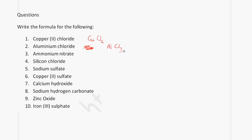Ammonium nitrate: ammonium is NH4, nitrate is NO3. The valency of ammonium is 1 and nitrate is 1, so we don't need to do anything — the formula is NH4NO3. Silicon chloride: silicon is Si, chloride is Cl. Silicon has a valency of 4 and chloride has a valency of 1, so we swap to get SiCl4. Sodium sulfate: sodium is Na, sulfate is SO4. Sodium has a valency of 1 and sulfate has a valency of 2, so we swap to get Na2SO4.